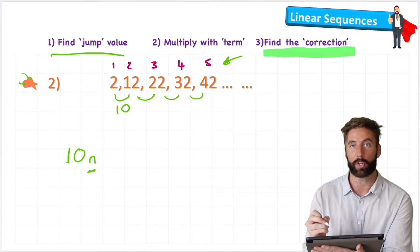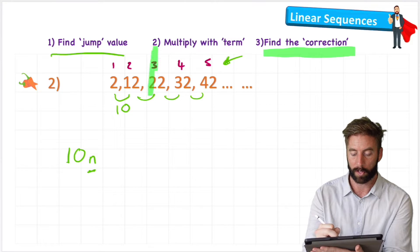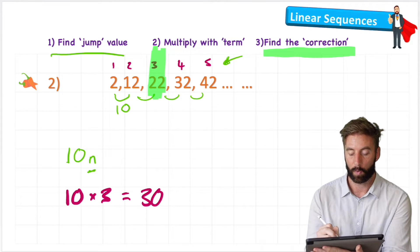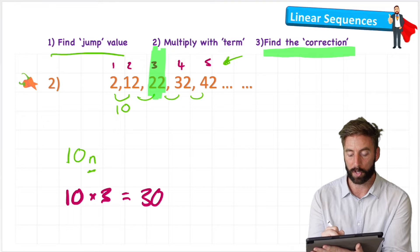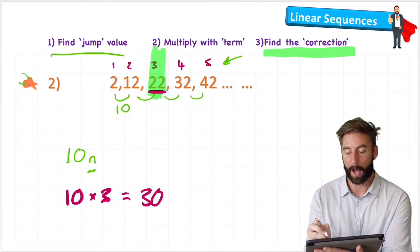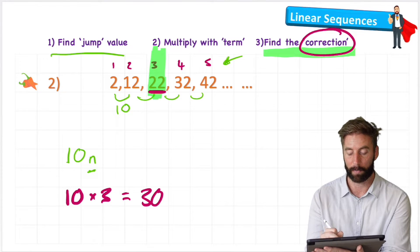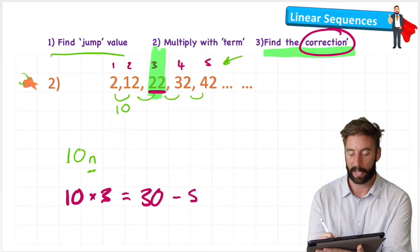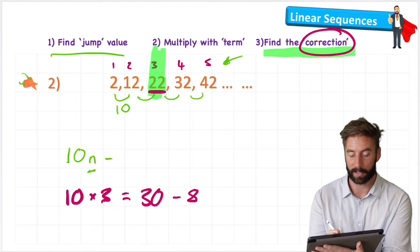So then we can do step 3, which is to find the correction. And to find the correction, we're going to use an example, one that we've got. Let's use this 3. So 10 times 3 equals 30. Well, 30 is close to the 22 that I'm looking for, but not right. So how can I correct from 30 down to 22? I would need to minus 8. So therefore, my formula should be 10n minus 8.